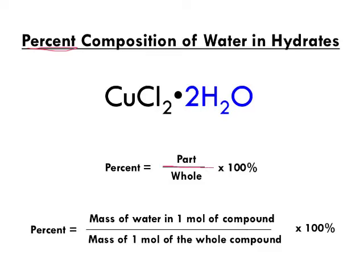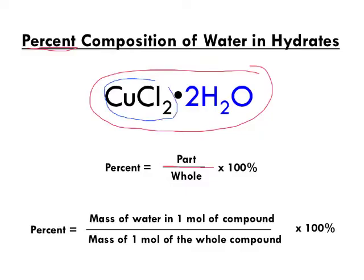If you look at this formula, this is an ionic compound. It's copper(II) chloride, and trapped between these ions are water molecules. This formula means that for every one formula unit of copper(II) chloride, there are two water molecules trapped inside.